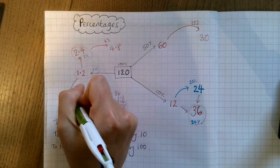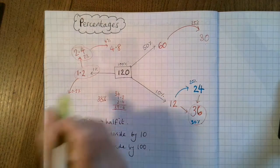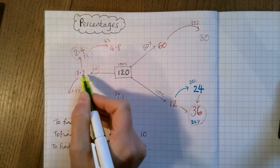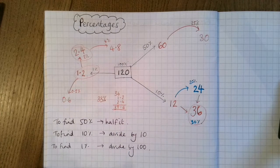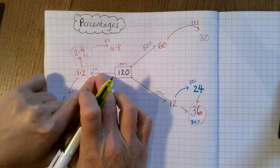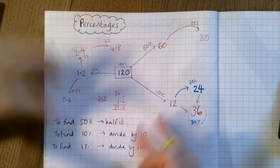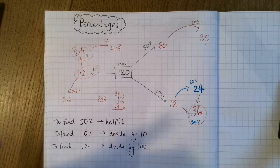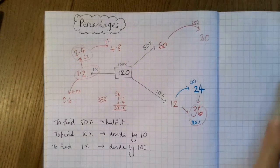One extra useful one would be how to find 0.5%. And we would half 1% to do that. So that would be 0.6 for that one. So once you know how to do these three, it's really like a jigsaw. You can just take the bits that you want and get everything that you possibly need for percentages.